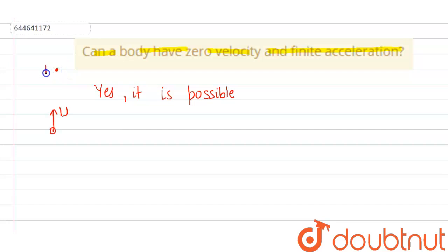suppose this is the highest point A, then at the highest point its velocity is equal to zero, but it has some finite acceleration, that is minus g vertically downwards.